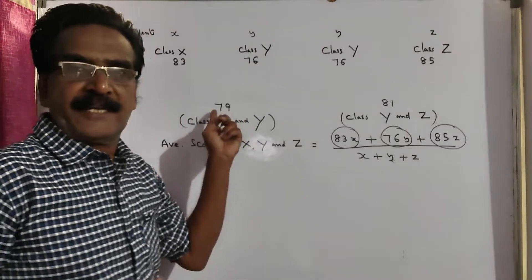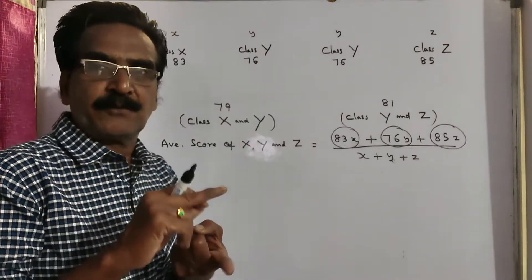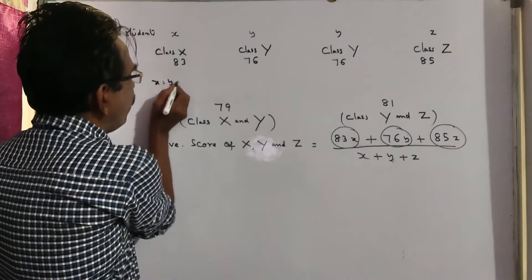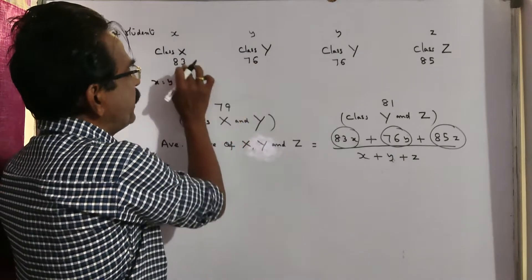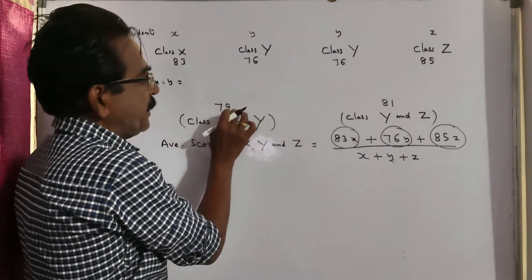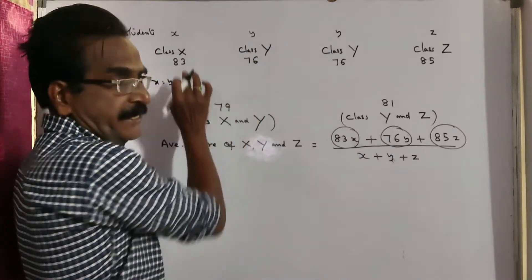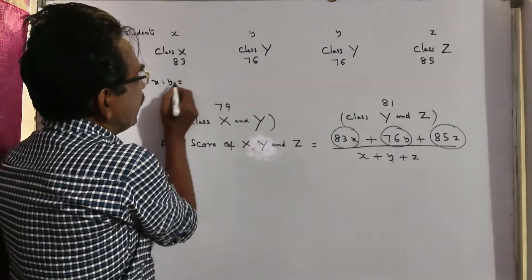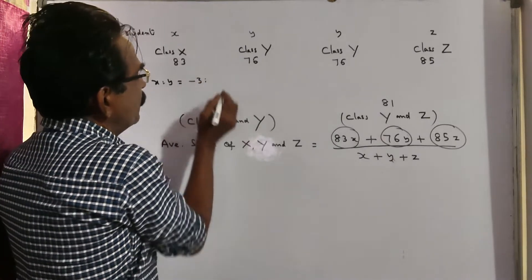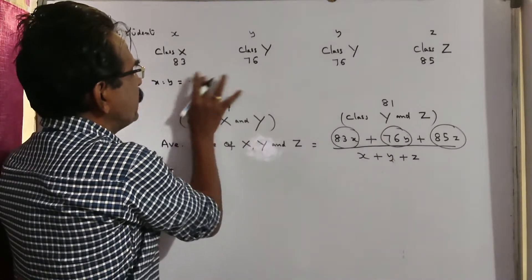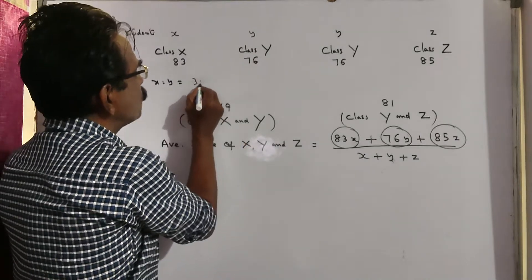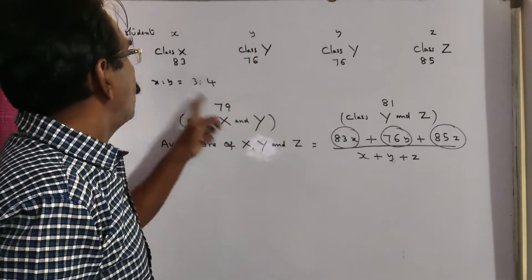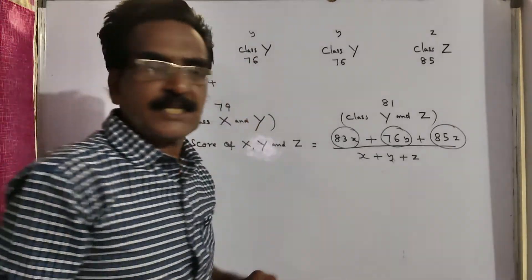Here I am applying the rule of allegation to get the ratio of the students of class X and class Y. Small x is to small y is equal to this minus this by this minus this. The difference here is minus 3 and here minus 4 — you can ignore the negatives. So the difference at 76 is 3, and the difference here is 4. So X is to Y equals 3 is to 4.